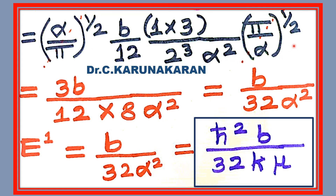On simplification, the expression reduces; cancellations occur and we get 3b divided by (12 × 8α²). On further simplification, this gives b/(32α²). Therefore, on substituting the expression for α, the perturbation energy expression is finally obtained. Thus the first-order correction to the ground state energy of the anharmonic oscillator, or the first-order perturbation energy, is calculated.